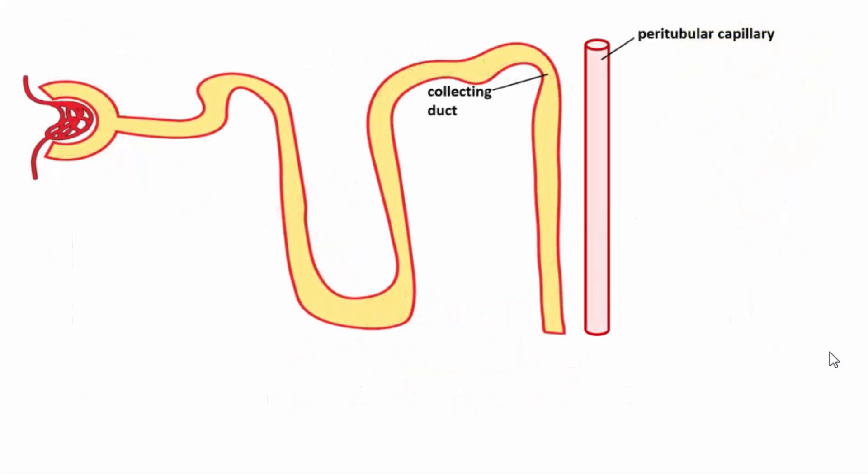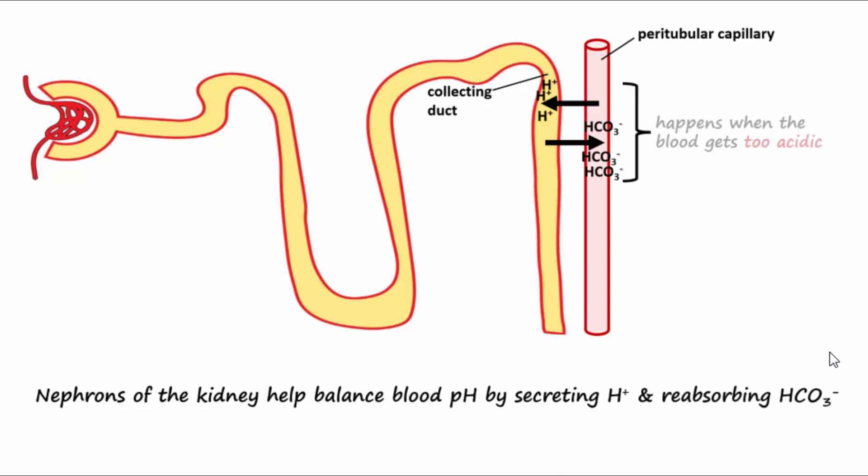An important way kidneys help balance blood pH is by secreting hydrogen ions and reabsorbing bicarbonate ions when the blood gets too acidic, or by secreting bicarbonate ions and reabsorbing hydrogen ions when the blood gets too basic.